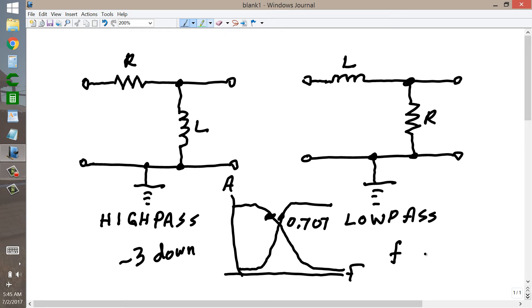The formula for the cutoff frequency for either of these two filters is F, the frequency at the cutoff, is equal to the resistance divided by 2 pi times the inductance.